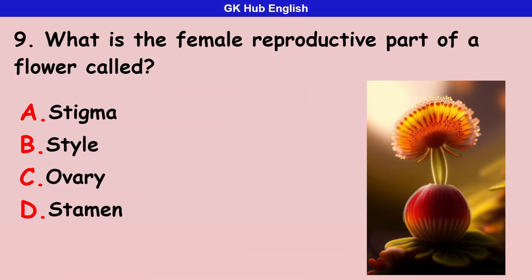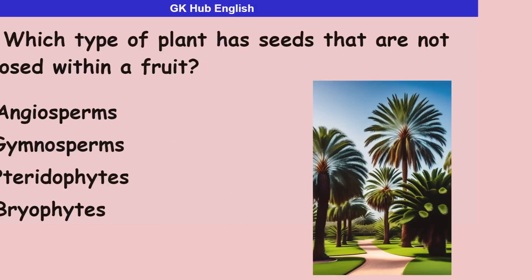what is the female reproductive part of a flower called? Option A is stigma. Option B is style. Option C is ovary. Option D is stamen. Correct answer is ovary.